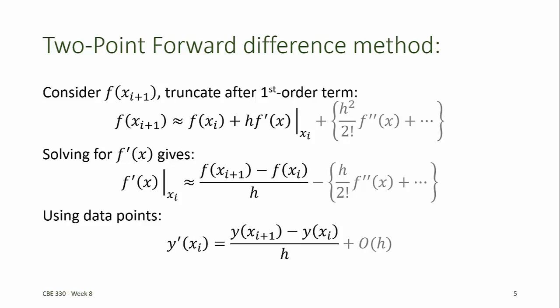Both the two-point forward difference and the two-point backward difference have a truncation error that we say is of order h, meaning that the error is proportional to h. Indicating that the truncation is of order h does not mean that the truncated terms have the order of magnitude of h. Rather, this is a useful scaling that we will later use to compare other finite difference methods — it tells us the relative size of the error for the different methods. To see that, we'll next look at a two-point central difference formula.